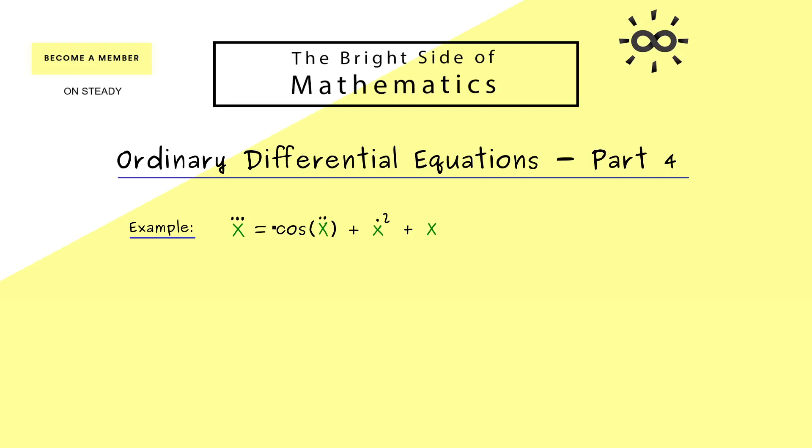So this is what we would call an explicit ODE of third order. Moreover the time variable t is not involved on the right hand side here, so it's a so called autonomous ODE. And now we will show that we can reduce this ODE to a system of ODEs of first order.